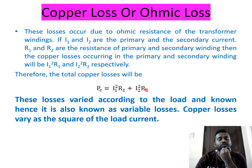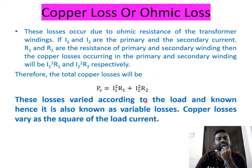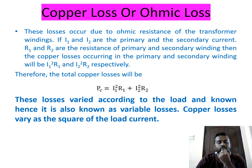Copper losses vary according to load and are therefore known as variable losses — they vary as the square of the load current. In contrast, iron losses are constant regardless of load and are known as constant losses. Iron losses are also called core losses; copper losses are variable losses proportional to the square of the load current.